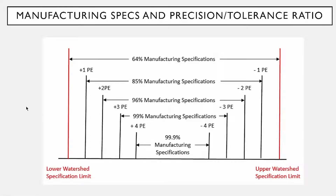Another thing that the EMP study does is allow you to look at manufacturing specs and the precision-to-tolerance ratio. Basically what it involves is saying: if we have our manufacturing specs set at our watershed specifications, and if we have a part that's measured between those specs, there's a 64% chance that it will be within spec. But you can decrease your specification range by moving them in by a certain number of probable errors each way.